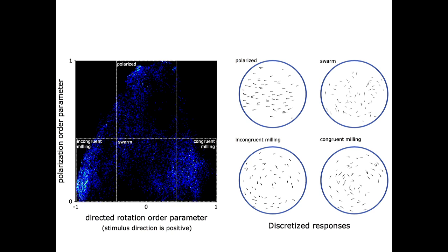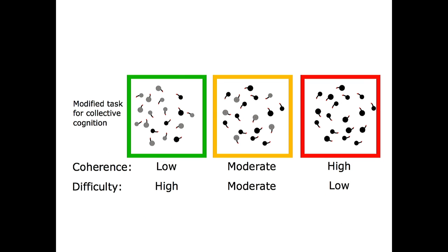So I'm still just in the early stages of analyzing the data that I've collected so far. And for now, I'm just going to do a very crude representation of the behavior by thresholding the behavior in two different directions. One is a threshold on the polarization parameter. So high polarization gives us a polarized state. And then when polarization is low, we get two thresholds. One representing when the rotation order is high, we get congruent milling. When it's low at negative one, we get incongruent milling. This is directed in the opposite direction of the stimulus. And then in the middle is the swarm state.